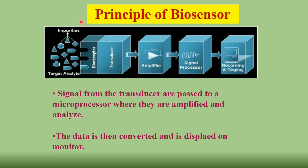The principle of a biosensor: how it works. You have bioanalytes that interact with the biorecognition element, or bioreceptor. It is converted into electrical energy. The chemical signal is converted into an electrical signal by using a transducer. It is then amplified, the signal is processed, and monitored on a monitor.